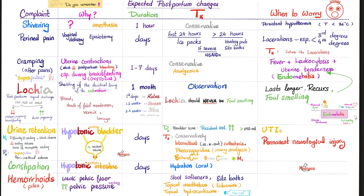For example, after labor and delivery, the puerperum — the lady around delivery — might complain of urine retention and stool retention. After the anesthetic, everything is slow: the bladder is slow causing urine retention, and the colon is slow causing constipation.